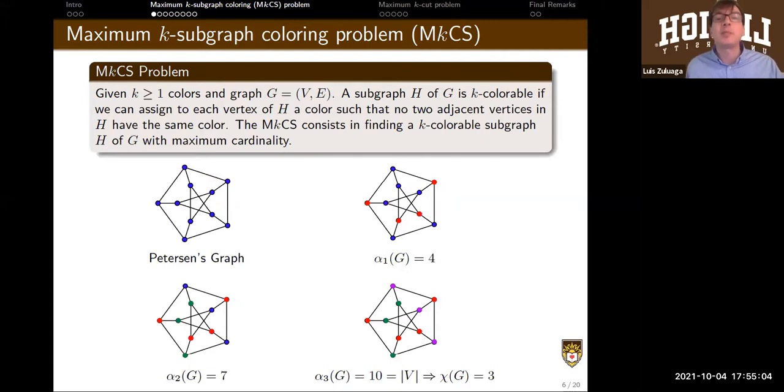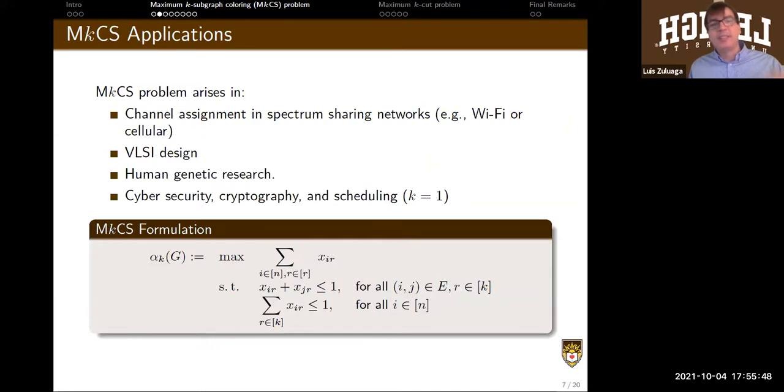So one problem is this maximum k-subgraph coloring problem. So the idea is, given a number of colors, choose the largest subgraph such that there are not edges between two nodes of the same color. So if you give me one color, I can take a subgraph of four nodes, but if you give me three colors, then I can actually color all the graph. So this is a very famous combinatorial optimization problem. It actually appears in applications in telecommunications, in circuit design, human genetic research. And as you can see, this is basically a generalization of the stable set problem, but it has these two constraints here.